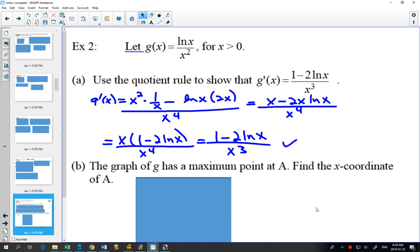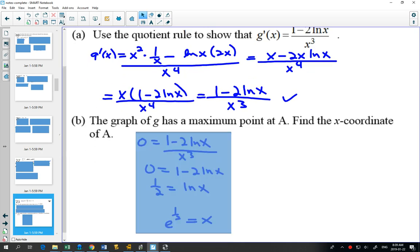Because if your tangent is horizontal, you're either going to have a maximum, a minimum, or one of those points of inflection. So we set our derivative equal to 0. And a fraction is only equal to 0 if the numerator is equal to 0, and solve for x.